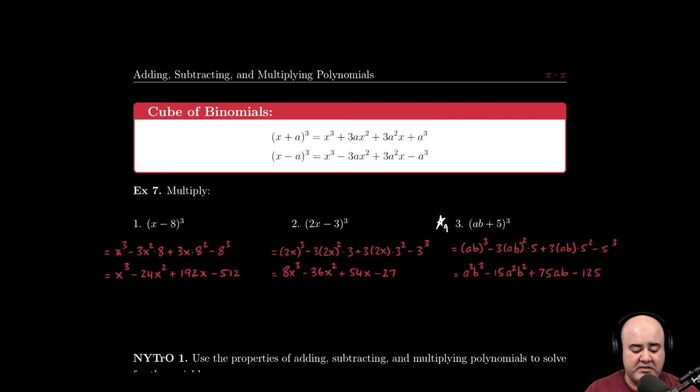So x³ minus 3 times square the first term, x², times the second, times 8, plus 3 times the first, x, times the square of the second, 8². Minus the second cubed, 8³.